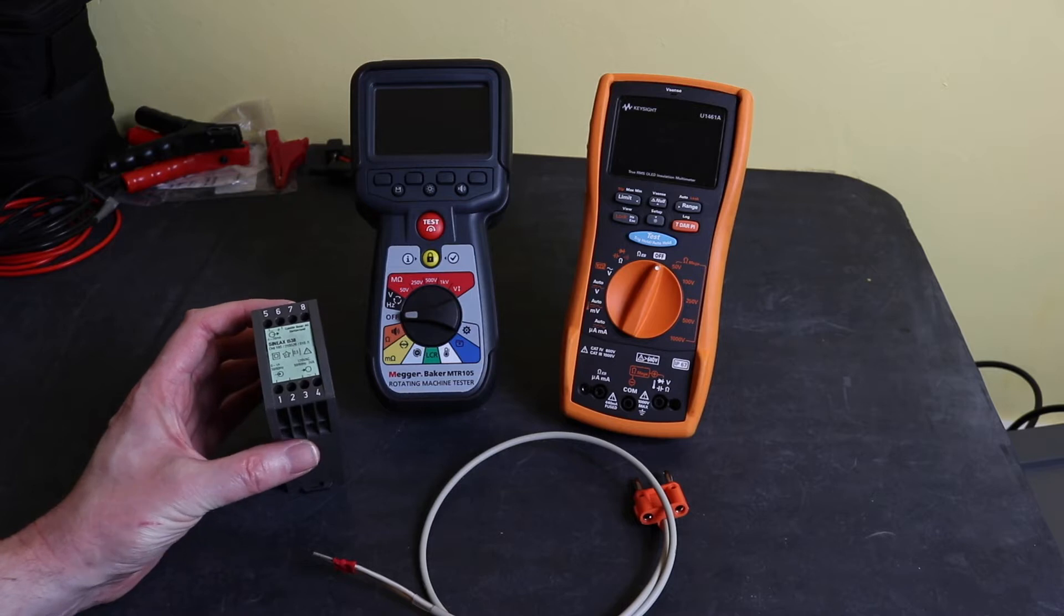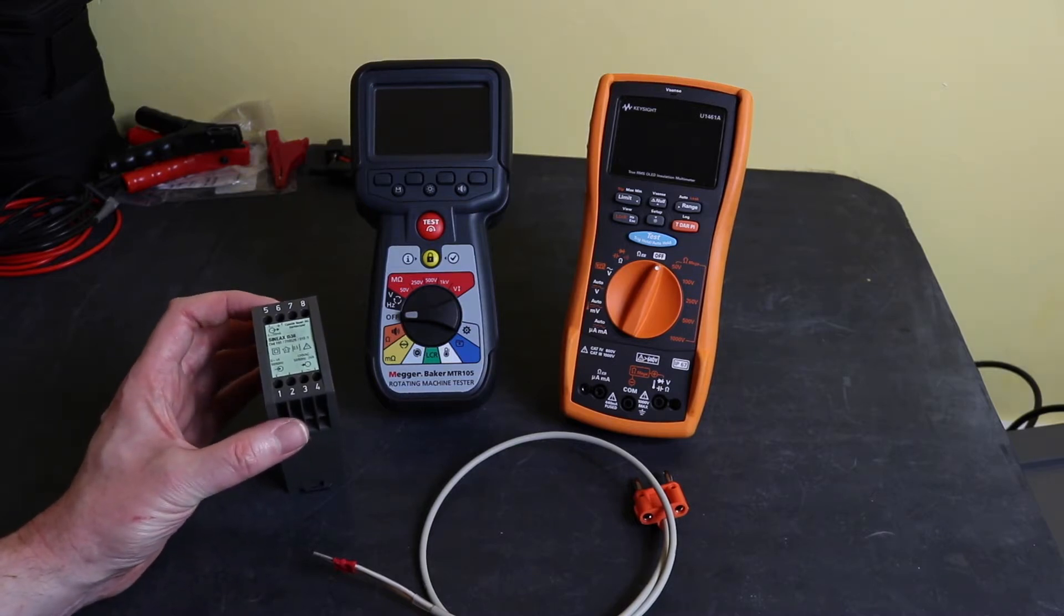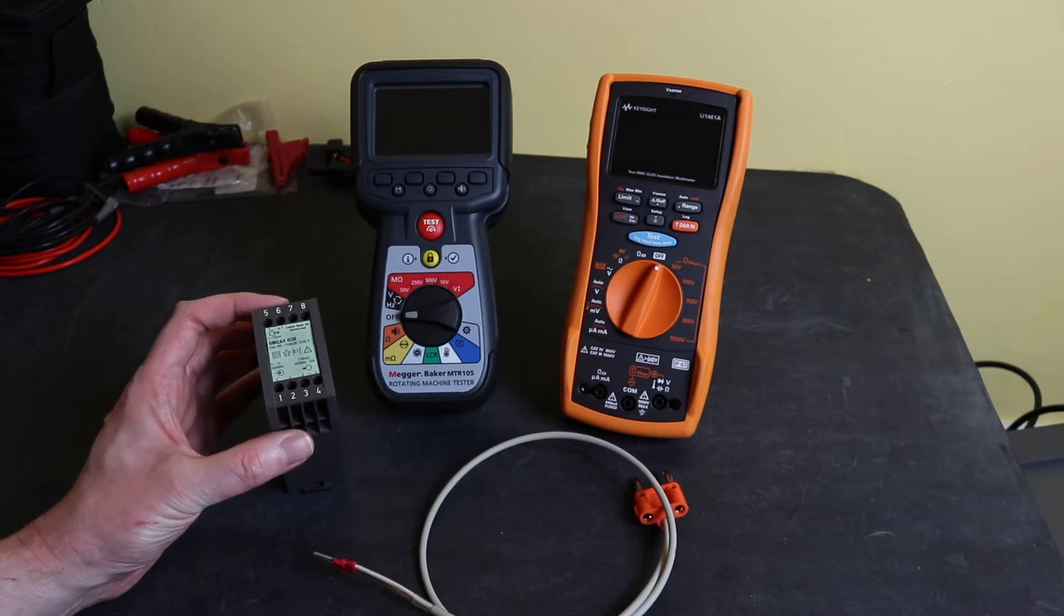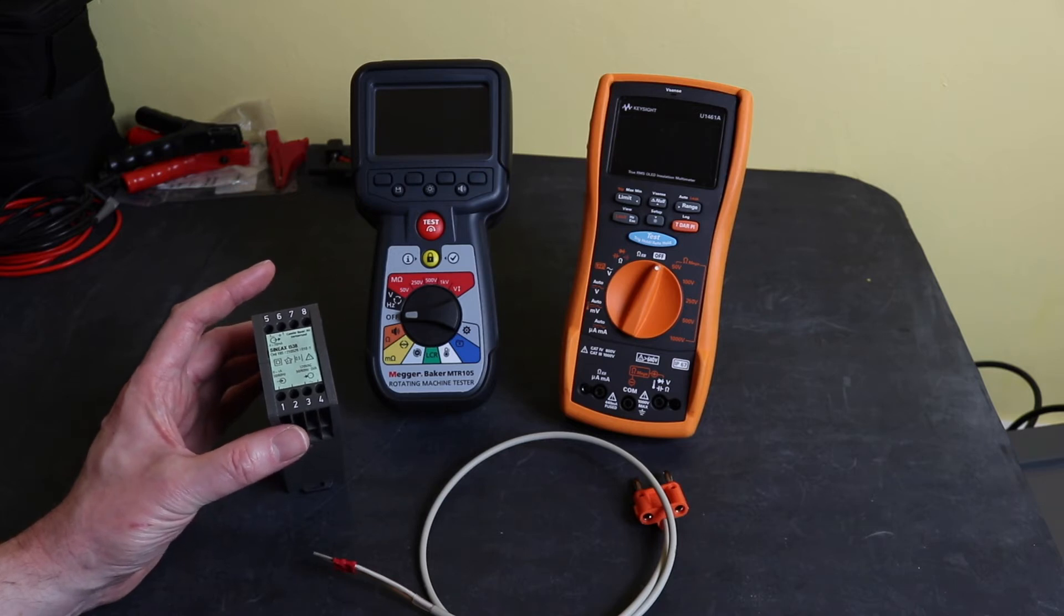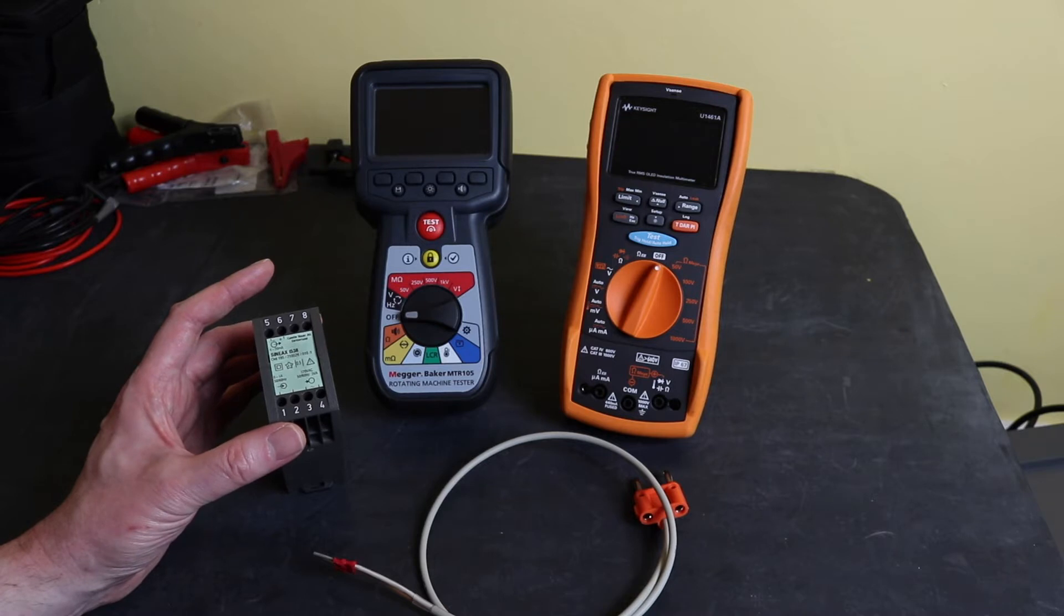It will take the signal from current transformer and put it out in a smaller milliamp signal that the control system will understand. In this case for this one it's 4 to 20 milliamps and that's the vast majority of the ones that I deal with.